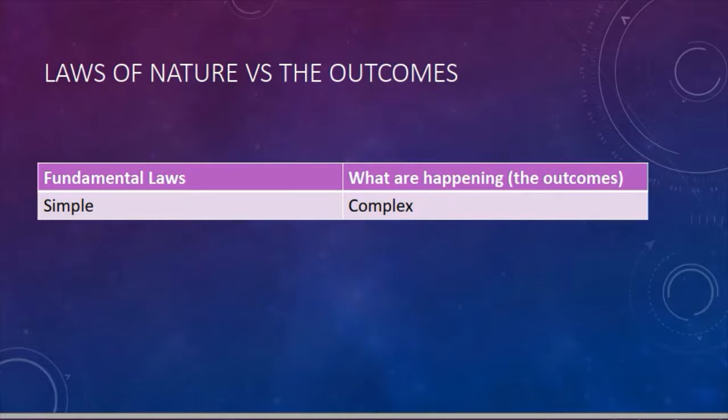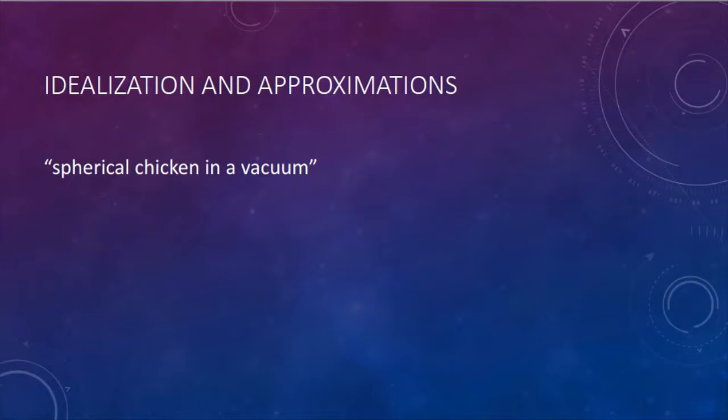So we cannot really predict what will happen next. We can only assign some probability. The way that science works, sometimes you have to make some idealization and approximations in order to simplify the problem, to remove some complication, so that you can focus on the essential laws underlying the motion of a particle, for example.